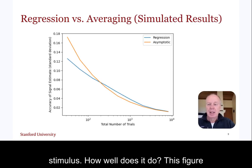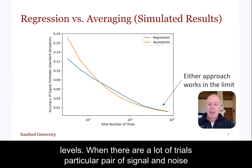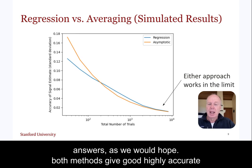How well does it do? This figure shows a signal estimation error for one particular pair of signal and noise levels. When there are a lot of trials, both methods give good, highly accurate answers, as we would hope.